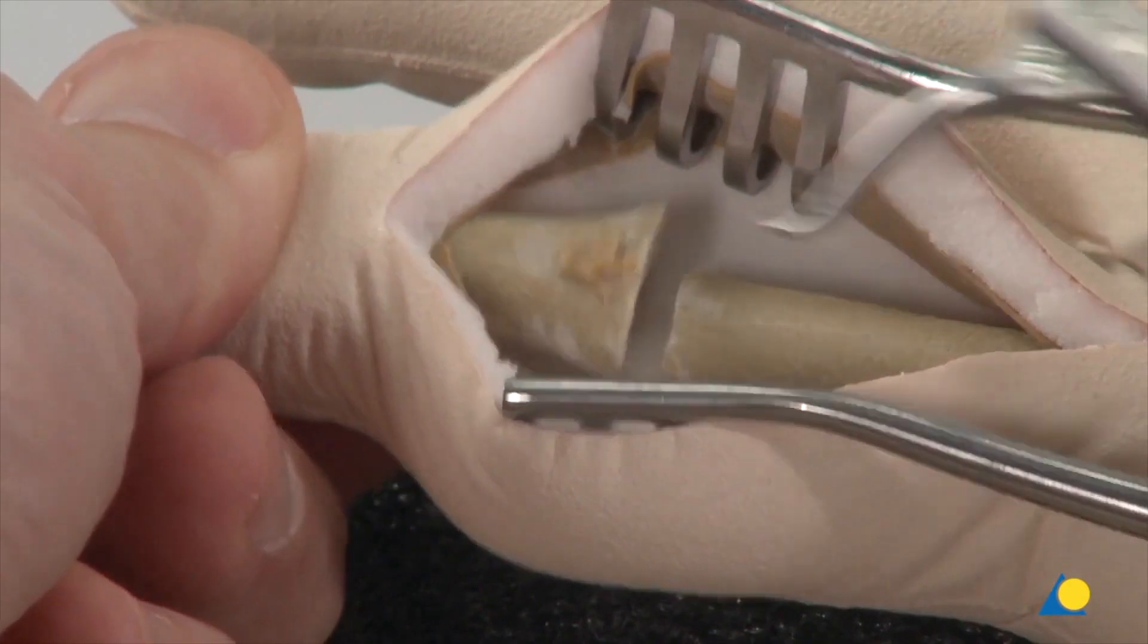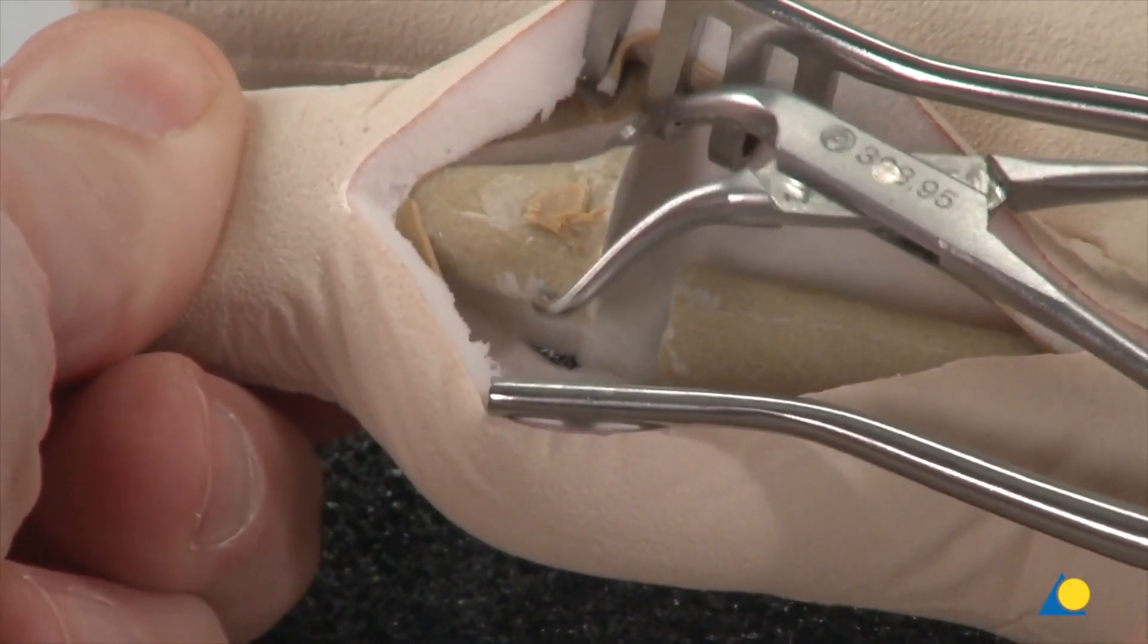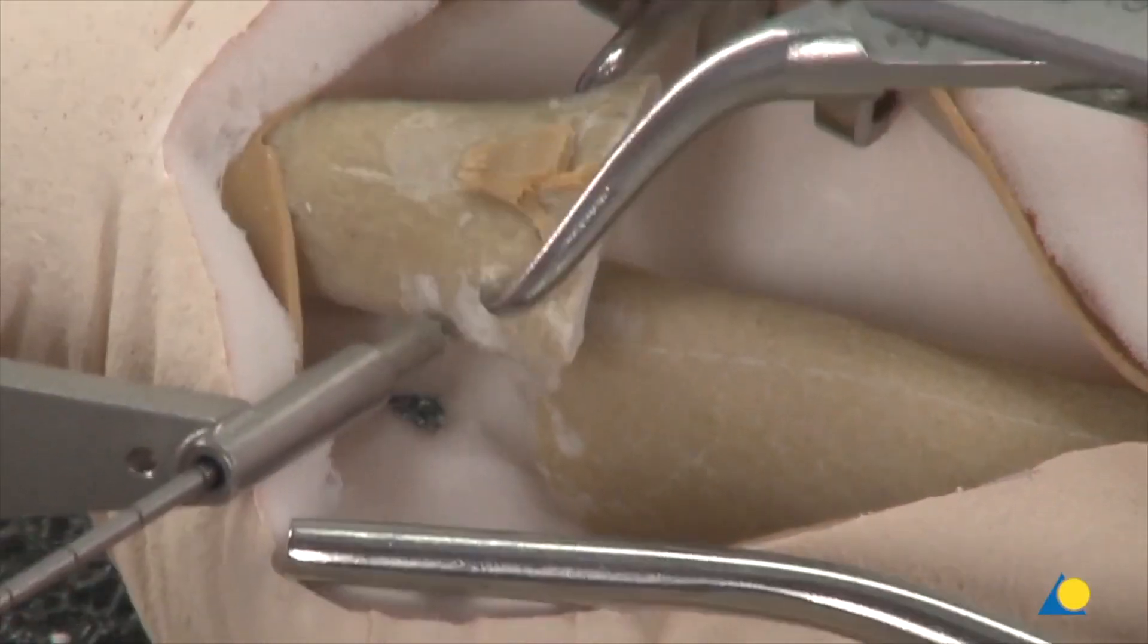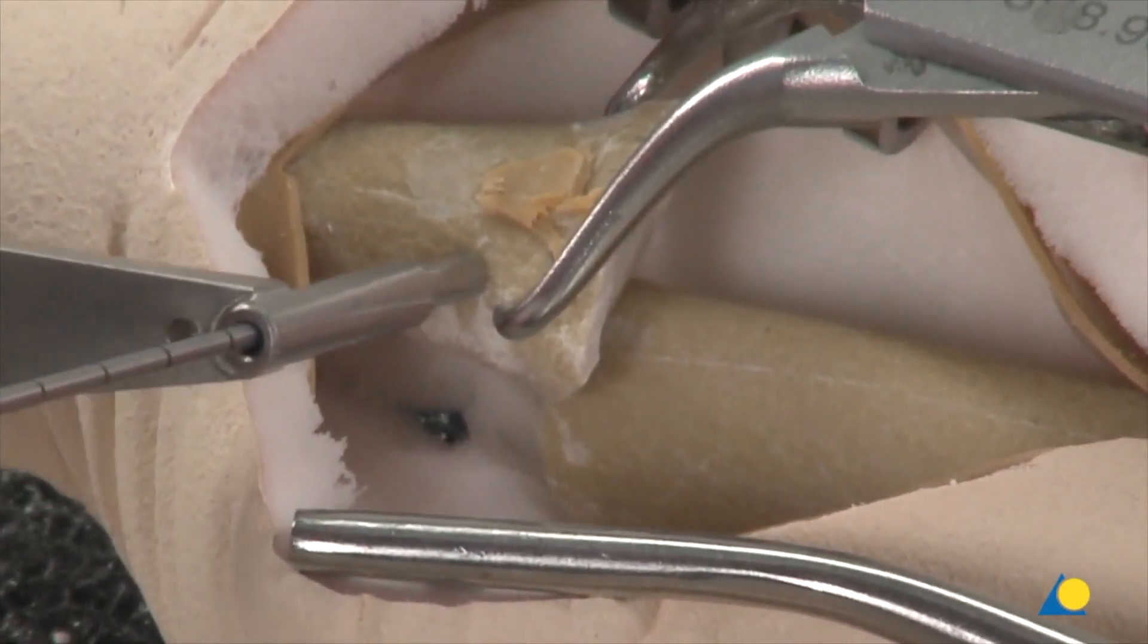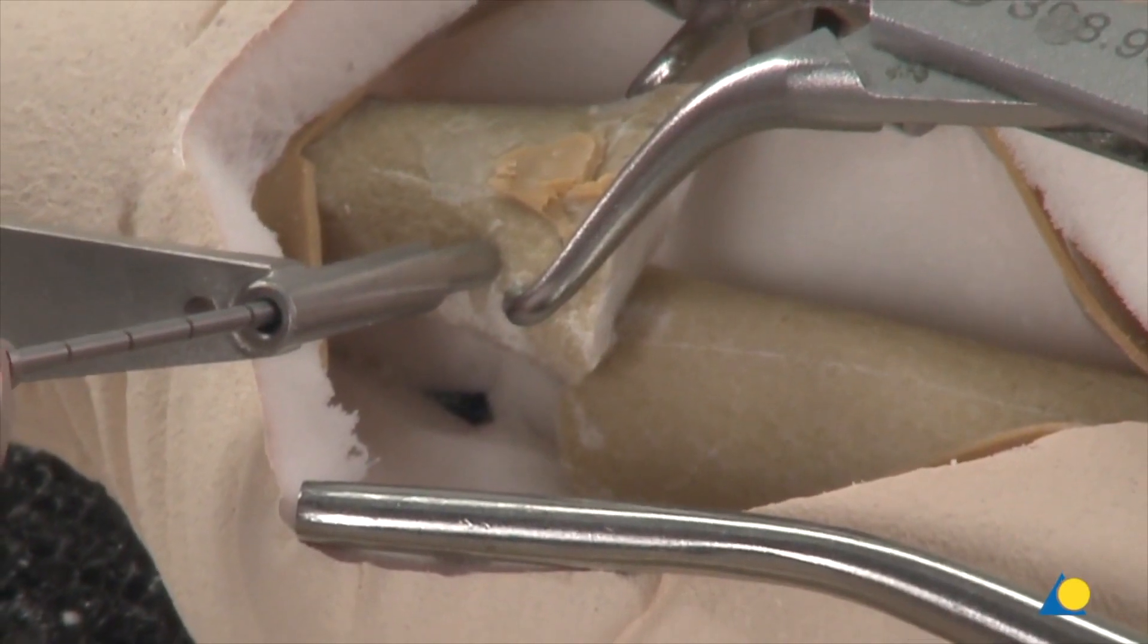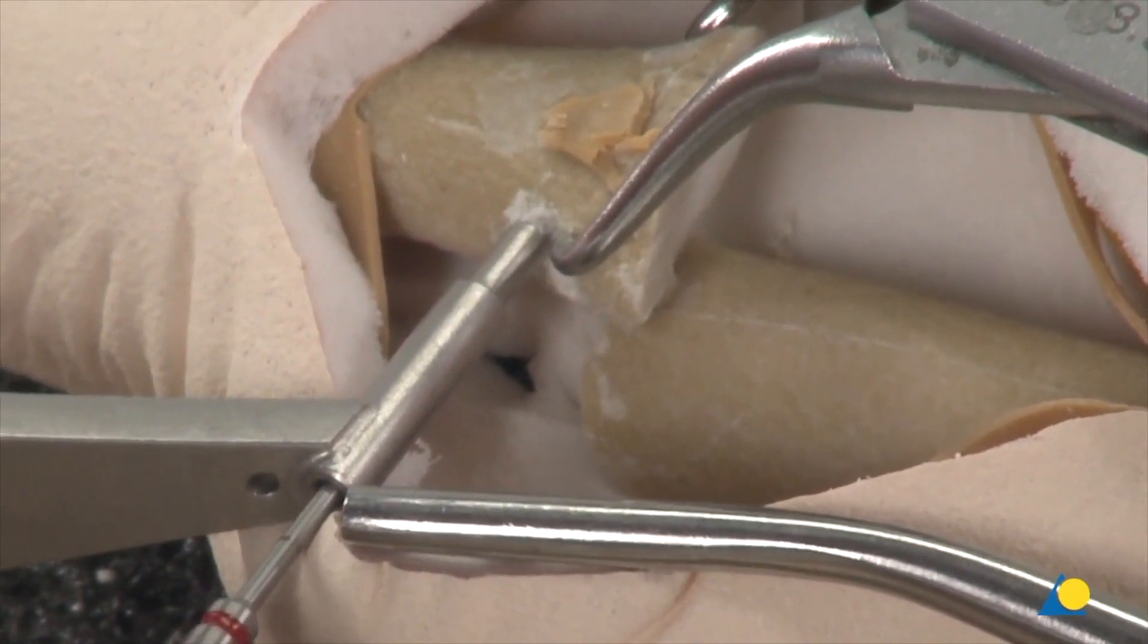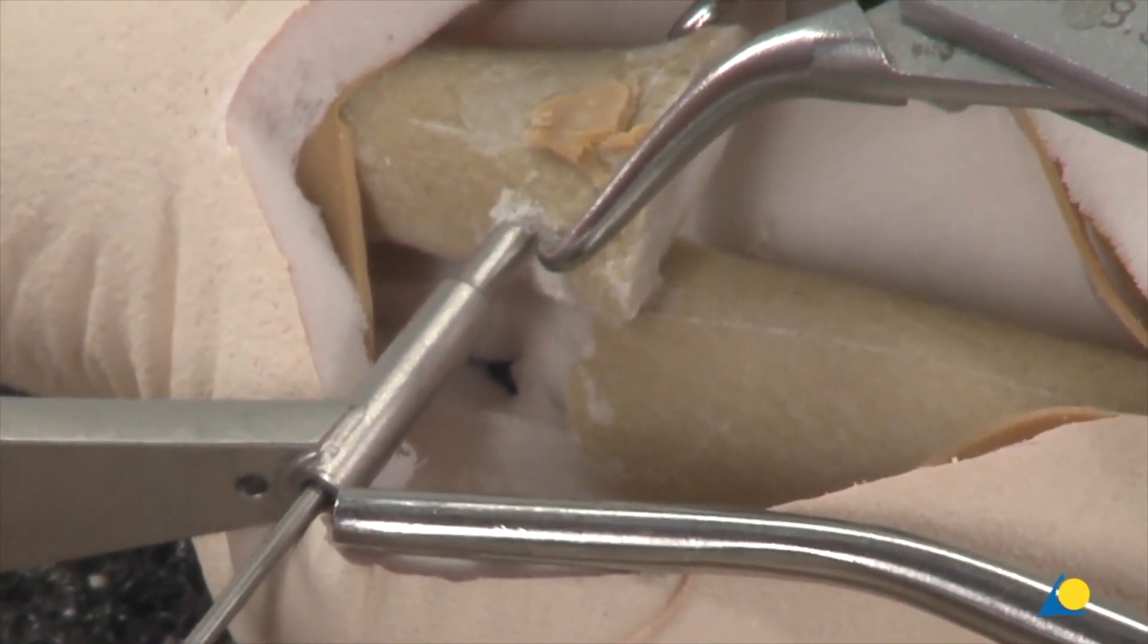The distal fragment is stabilized with a reduction clamp. A transverse channel at least 0.5 centimeters distal to the osteotomy is drilled in the dorsal half of the middle phalanx with the 1.1 millimeter drill bit using the appropriate drill sleeve.